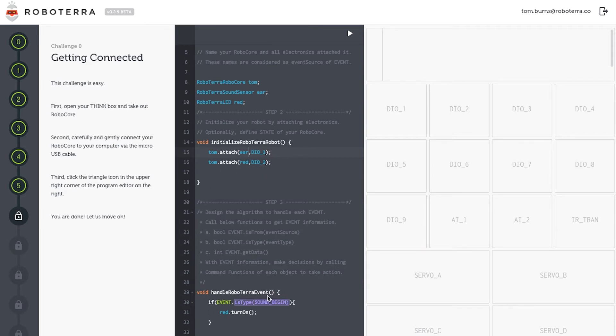Finally, inside Handle RoboTerra Event, I'll use a conditional statement to tell my robot what I'd like it to do. If the event is of the type Sound Begins, that means when my audio sensor hears sounds, the red LED will turn on.